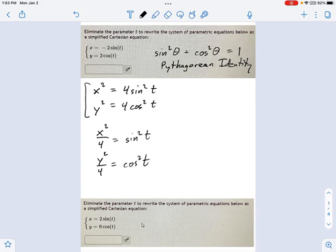Well, you add those up, you just get 1. So, using the Pythagorean identity, I can just say this: x squared over 4 plus y squared over 4 equals 1. And if you like, you can simplify it a little bit and just say x squared plus y squared equals 4.